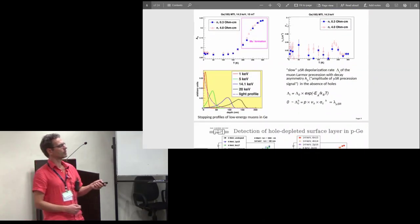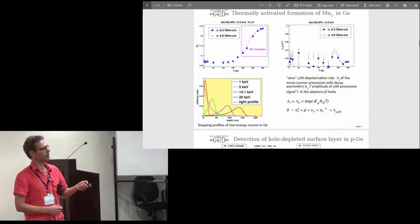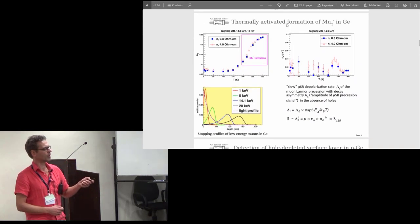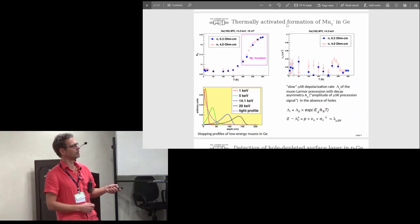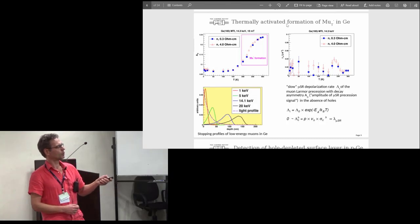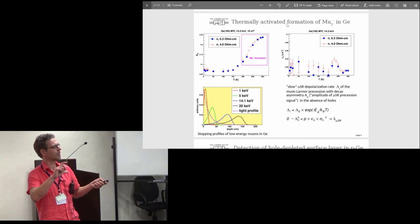This is when you do a temperature scan using the muons at an energy of about 14 keV. We see here the stopping profile, so 14 keV is somewhere the mean depth is 80-90 nanometers. These are two n-type germanium wafers. If you increase the temperature, low temperature, this is the amplitude of your signal processing at the Larmor frequency.